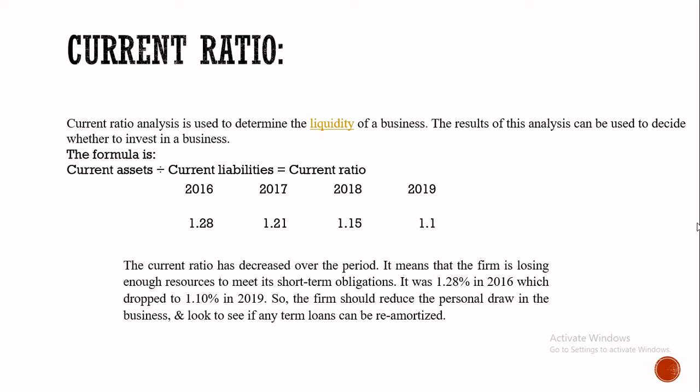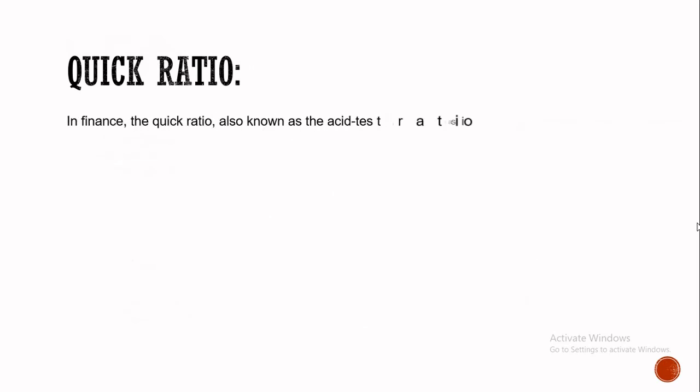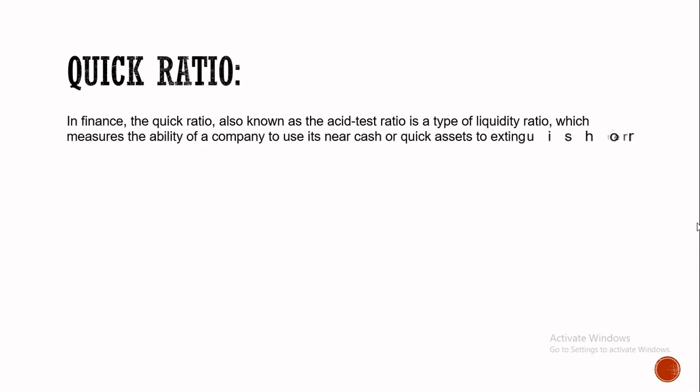A decreasing current ratio is bad for a company and an increasing current ratio is very good. Let's move on to the quick ratio. In finance, the quick ratio, also known as the acid test ratio, is a type of liquidity ratio which measures the ability of a company to use its near-cash or quick assets to extinguish its current liabilities immediately.